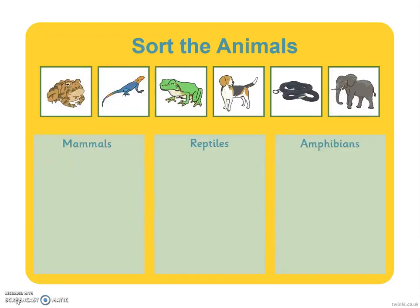Right, let's have a go at sorting some of the animals into their groups. We have six animals and three groups: mammals, reptiles, amphibians. Pause the video as you sort them out.